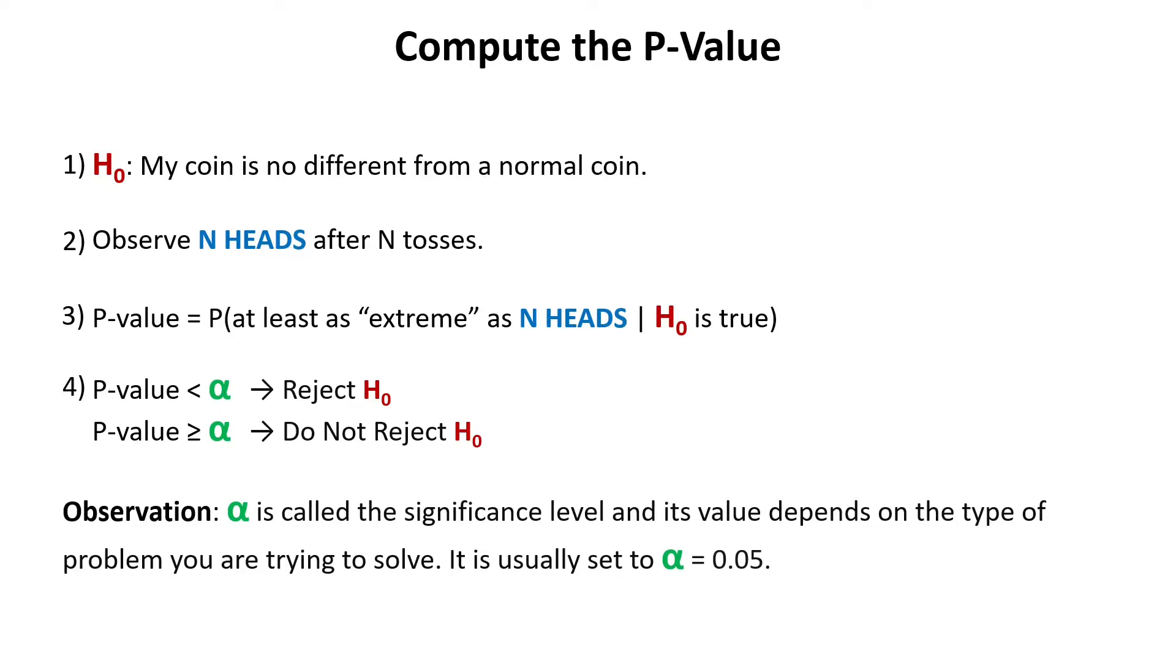And for those of you that might wonder, alpha is a constant and is called a significance level and its value depends on the type of problem you are trying to solve. It is usually set to 0.05 and we'll use this value from now onwards. And now, as I promised, let's see what it means at least as extreme as N heads by looking at the specific case where you get two heads after two tosses.